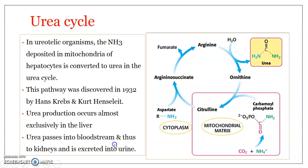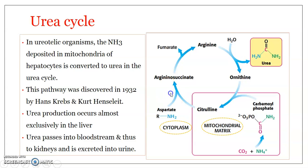Urea produced in the liver passes into the bloodstream and reaches the kidneys, where it is excreted in the form of urine. In the hepatocyte — the liver cell — the urea cycle is completed in both the cytosol and the mitochondria. Some enzymes involved are present in the mitochondrial matrix, and the rest are present in the cytoplasm. Hence, the urea cycle spans both the cytoplasm and mitochondria of liver cells.